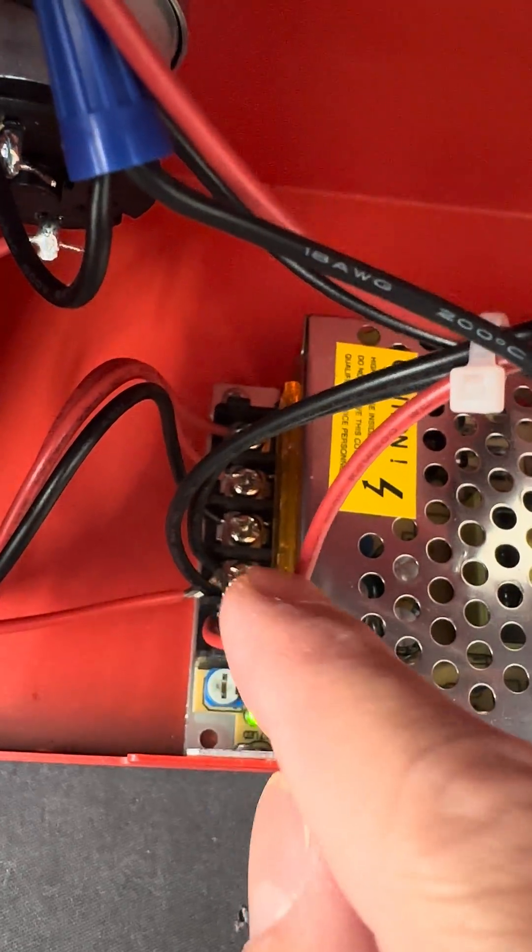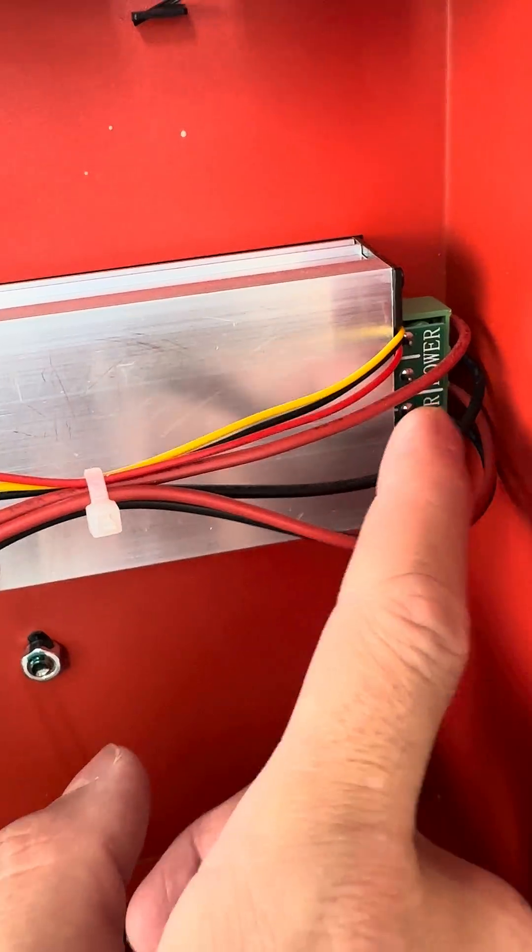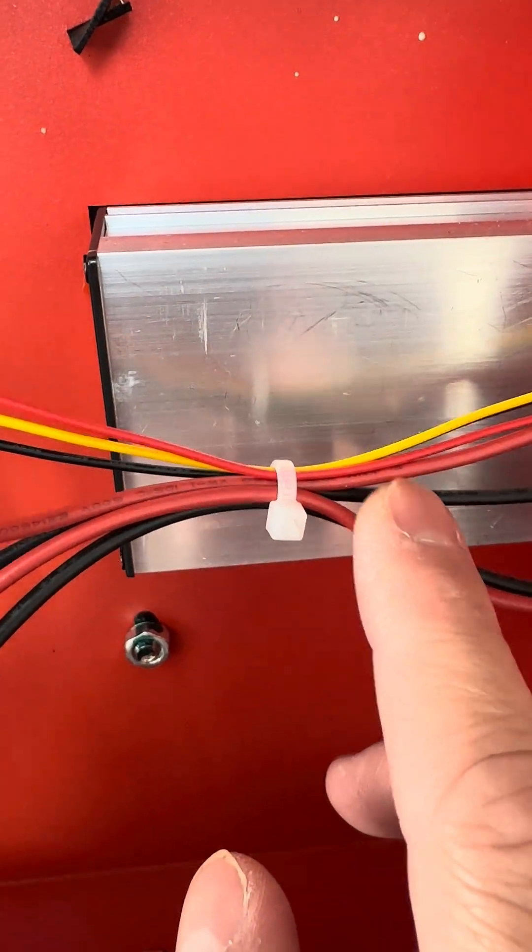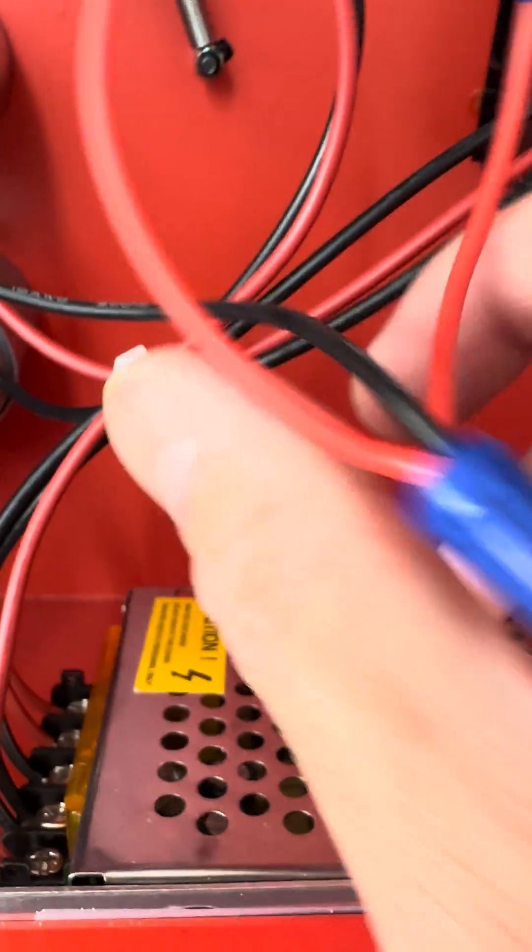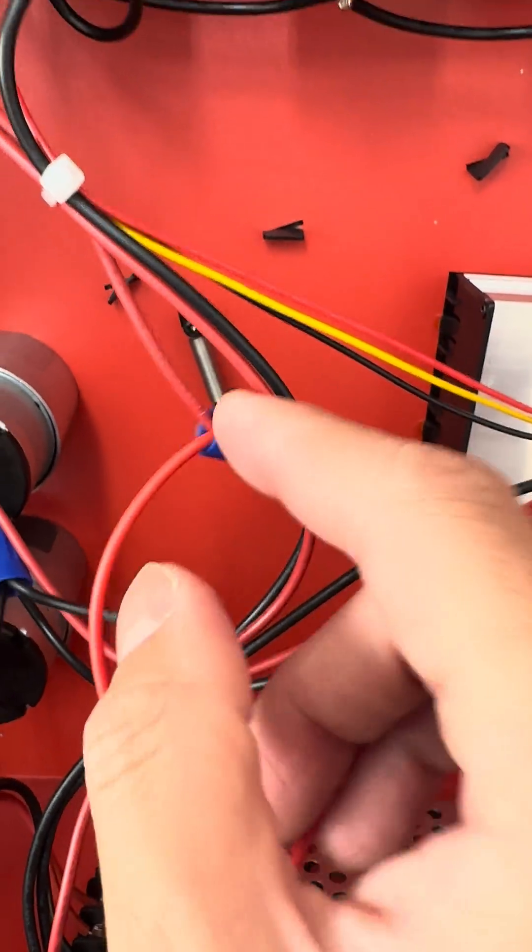Pretty straightforward. Then you look for this red power wire coming from the speed controller. It's right here. Again, I need to use some extender.